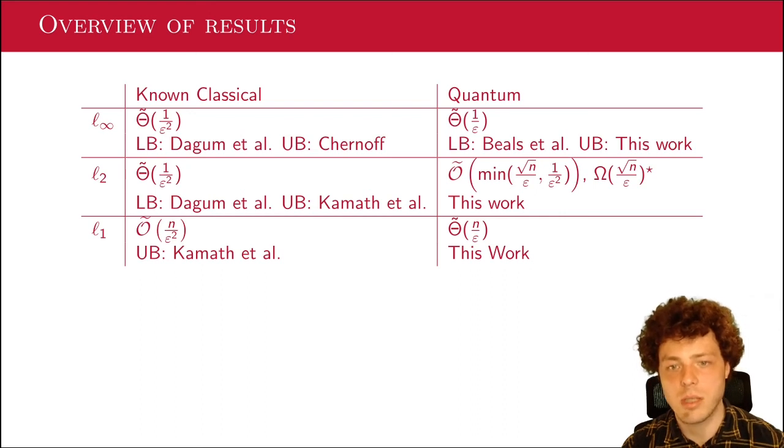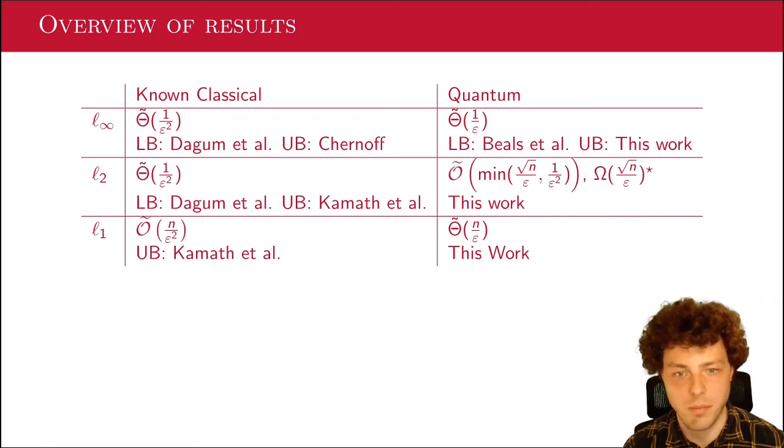And then L1 norm, Kamath et al. get, just by norm conversion again, an n over epsilon squared result. But quantumly, we get n over epsilon to get L1 norm or total variation distance. And we also show that this is tight. So we also have a matching lower bound for this.